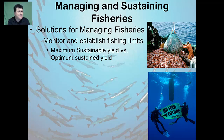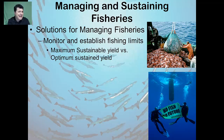Maximum sustainable yield is relatively easy to estimate, but it's not as reliable a measure as once thought. Because of the variation and complexity of all the different factors that can affect fish stocks, it's very difficult to effectively develop an accurate maximum sustainable yield for any given fishery population. In recent years, management objectives have begun to reflect not only the biological yield of fisheries, but have also included economic and social considerations. This is referred to as the optimum sustained yield.